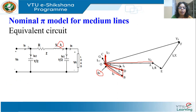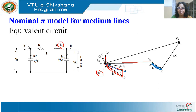The current flowing through R and X is IL. The resistive drop is in phase with IL, so draw ILR. This is parallel to IL. The drop in the inductance leads the current by 90 degrees, so I have ILX. Adding Vr, ILR, and ILX gives VS.